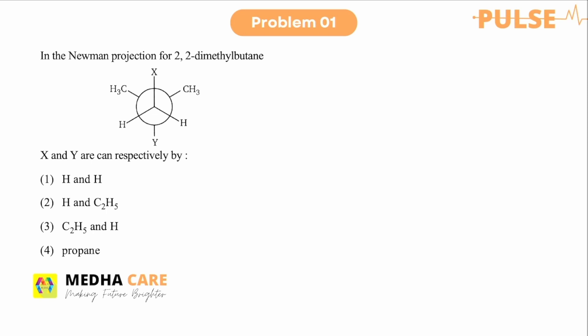First, if we draw the structure of 2,2-dimethylbutane, it will be this one. Also do the numberings: one, two, three, four. So you can see here in this question, in the Newman projection —